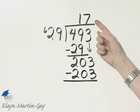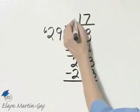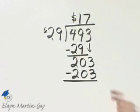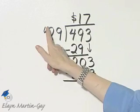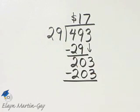The price of each can of paint costs $17 then. And how can you check? Multiply 17 times 29, and you should have that total price of $493.